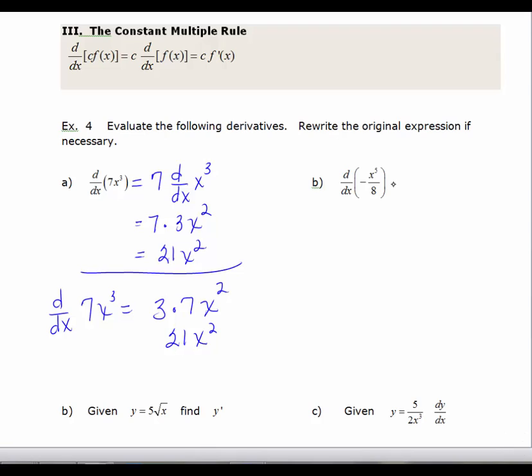So you're allowed to take the exponent or that n value down and multiply it by the constant. Alright, for part b, we're going to rewrite this as d/dx. Instead of having negative x to the fifth over 8, it's going to be negative 1/8 times x to the fifth. If I don't rewrite this, I'm left with a quotient. And to find the derivative of a quotient is more involved. And we don't know how to do that yet. I haven't showed you.